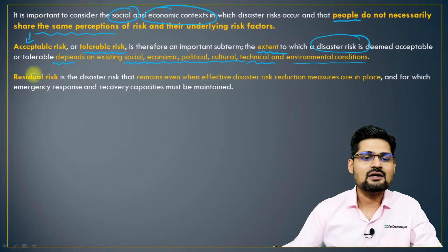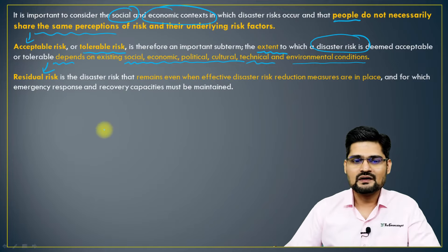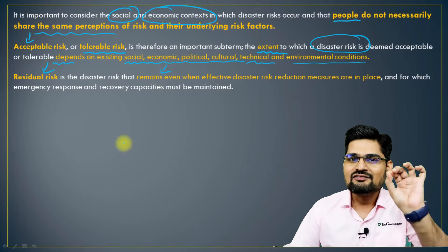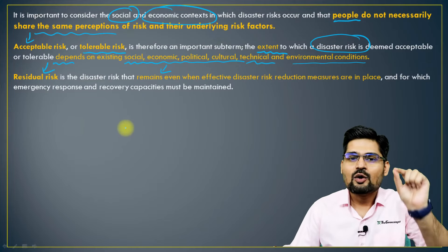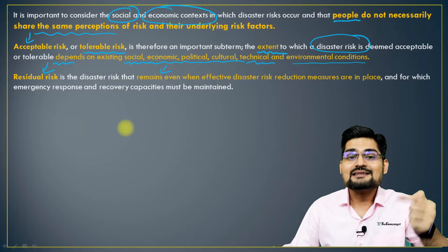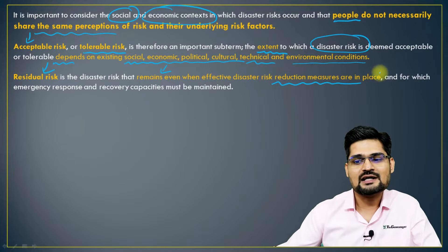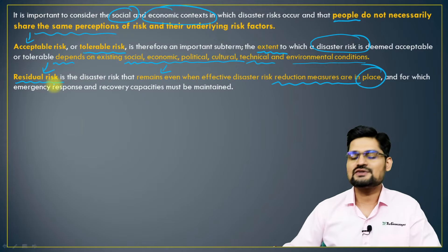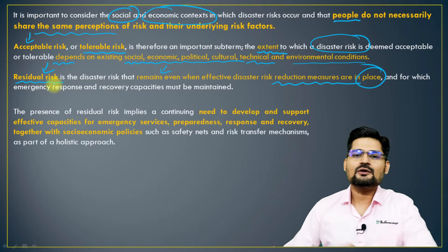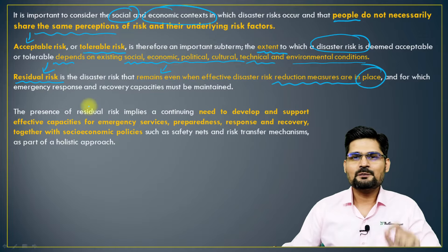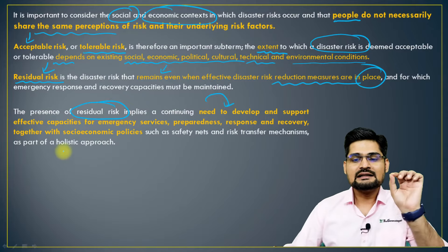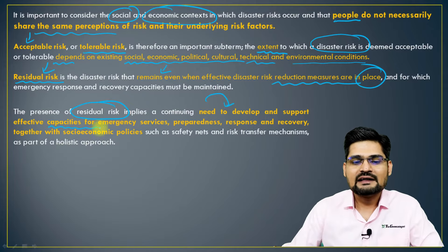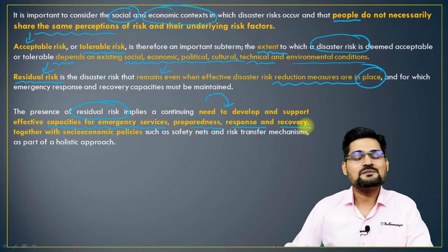Then there is something called residual risk, which is very important. This is the risk that remains even after effective disaster risk reduction methods are applied — the amount of risk that is always there, pertaining to our disaster management. Disaster risk reduction measures are in place, but still we have certain residues. We need to look into the examination of these particular risks.